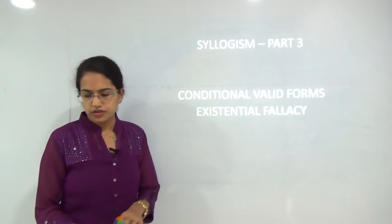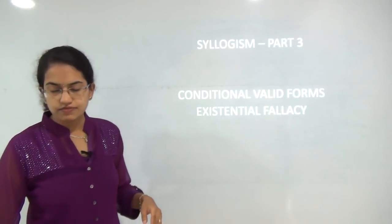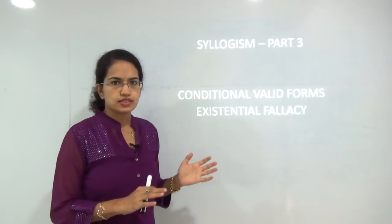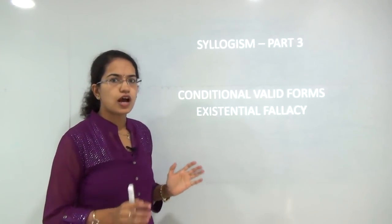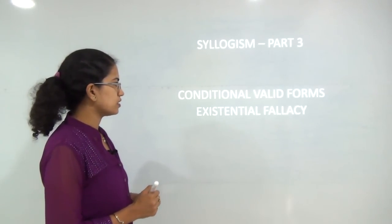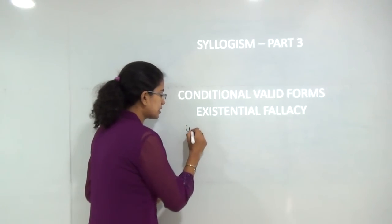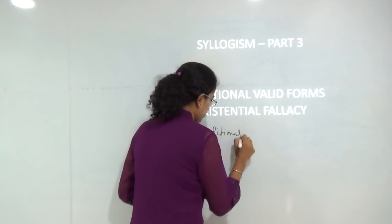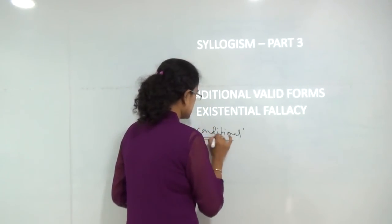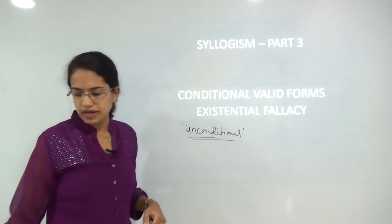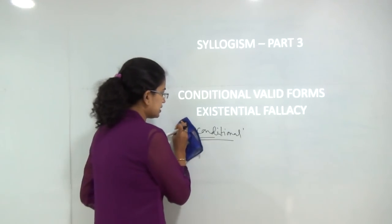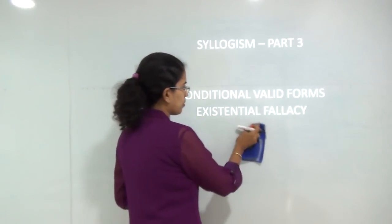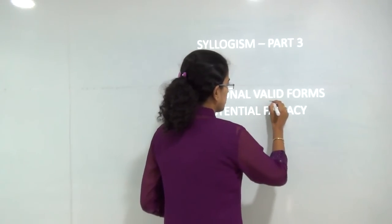Welcome to this session. Today we will be covering the final part for the class on Syllogism. In the previous two classes we have talked about the introduction on how to solve problems related to Syllogism and the cases of unconditional valid forms. Today what we would be doing is the conditional valid forms, which is a bit tricky concept. Let's understand where to apply the conditional valid forms and why we need to apply those.